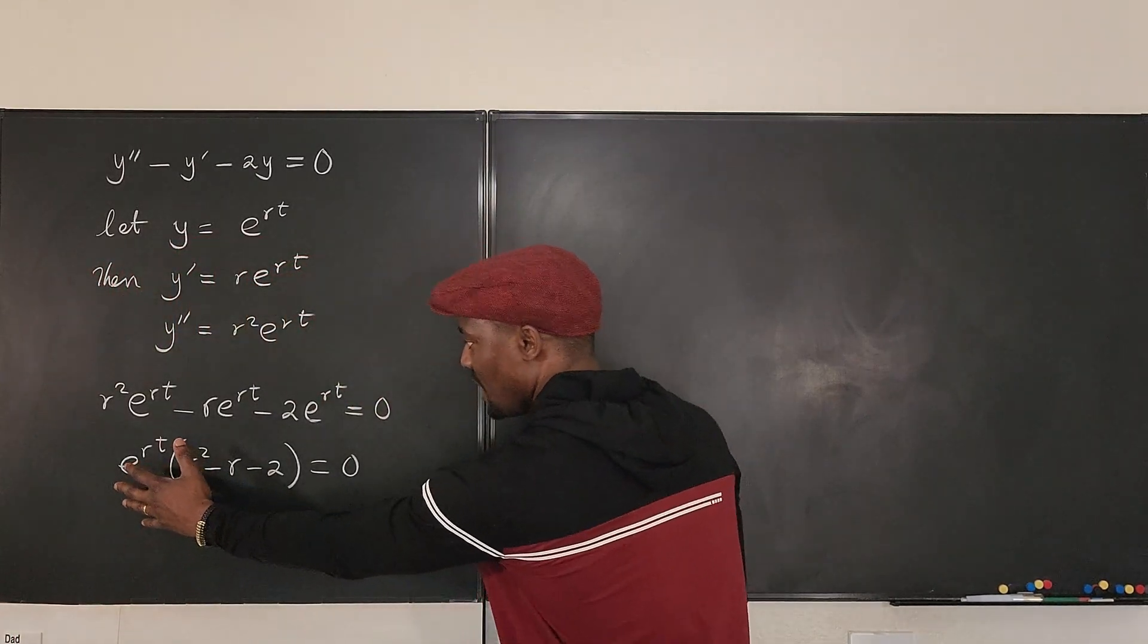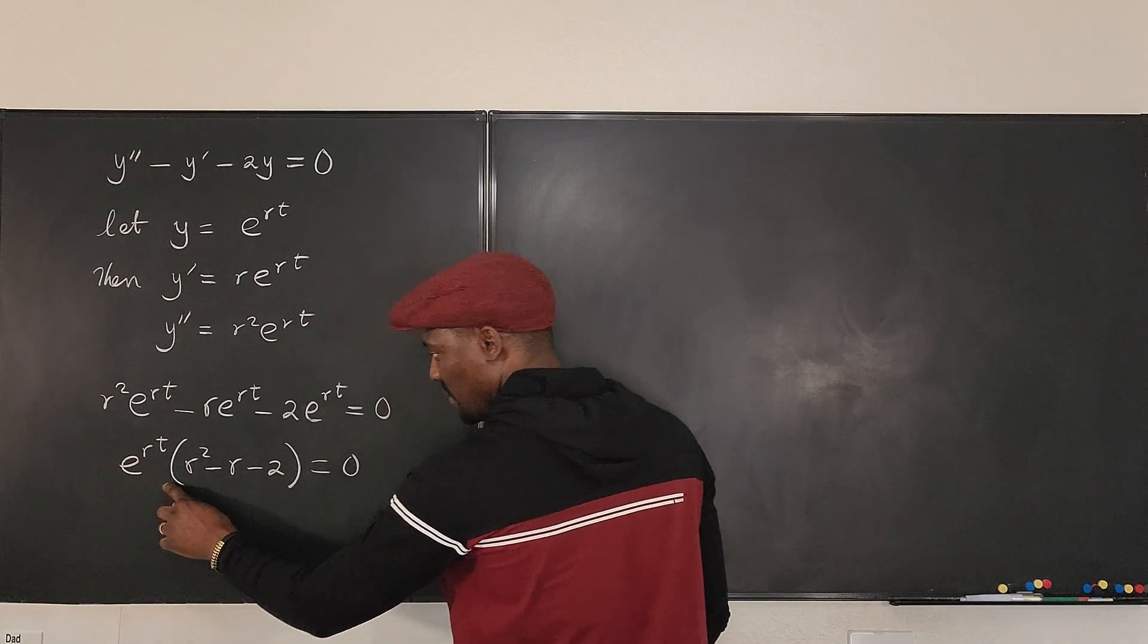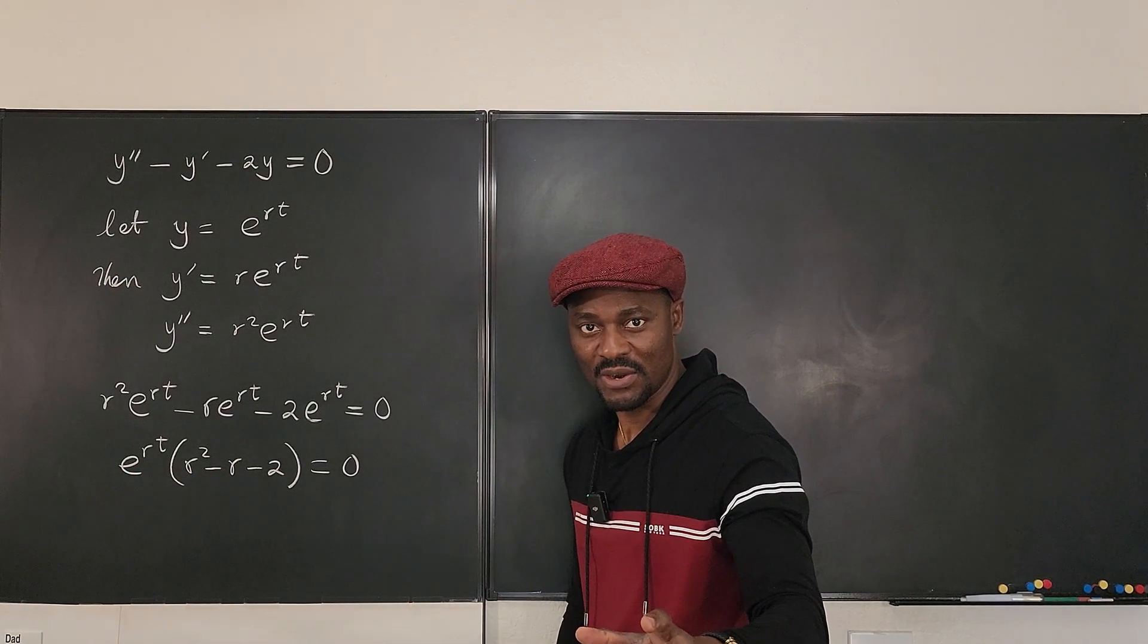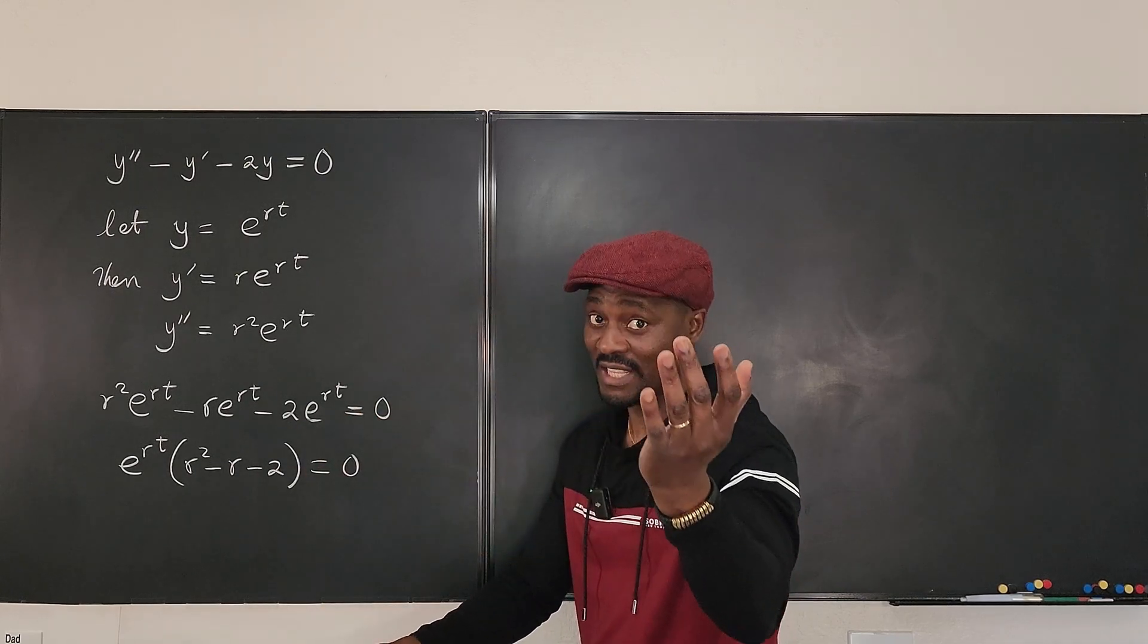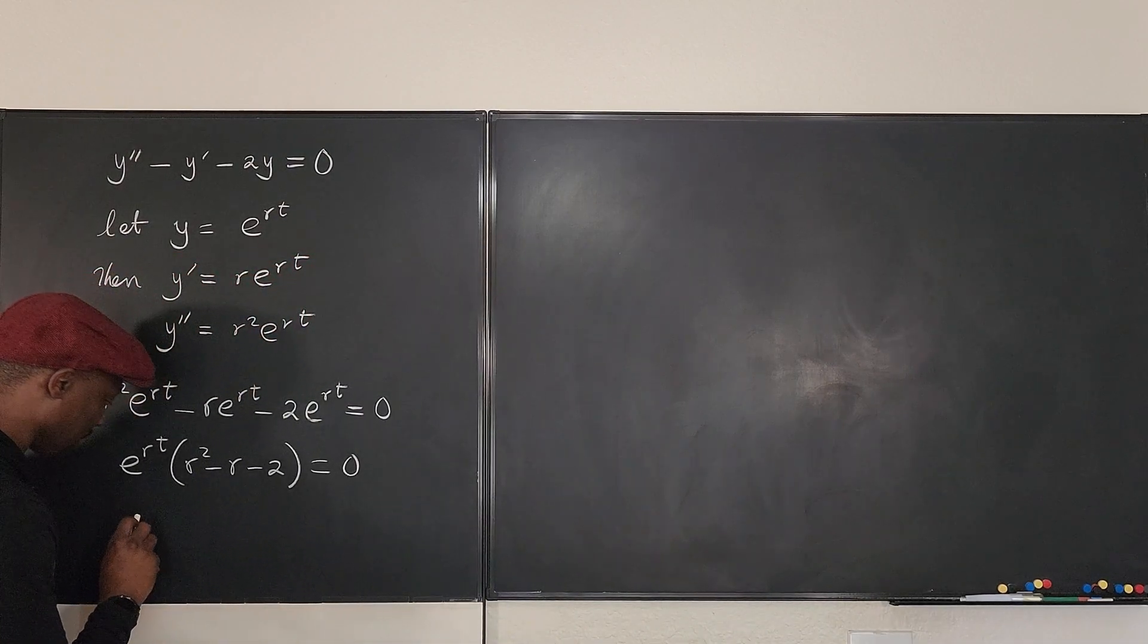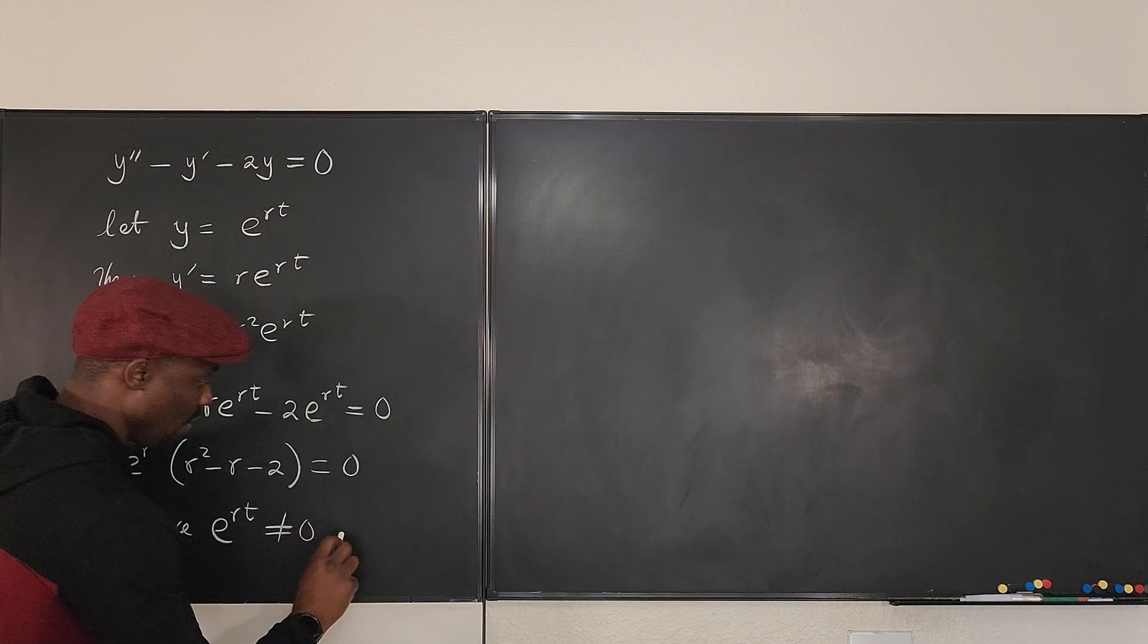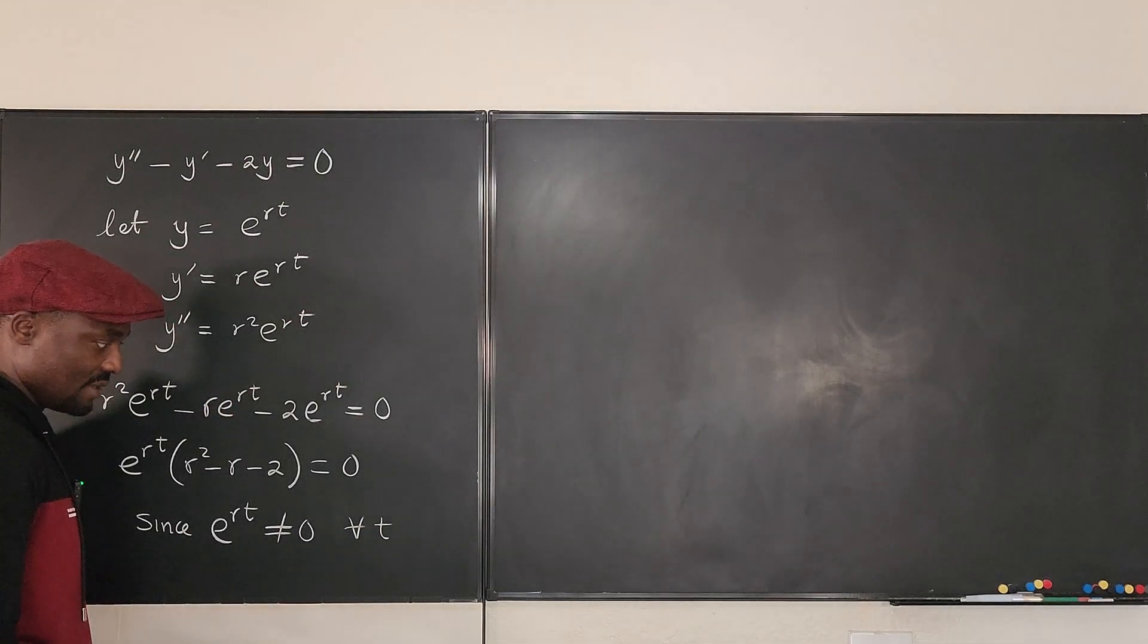So we can solve this. This product is equal to zero if this is equal to zero or this is equal to zero. But we know that an exponential function is never equal to zero. Remember, e to anything is either a fraction or it gets bigger, but it will never be equal to zero.